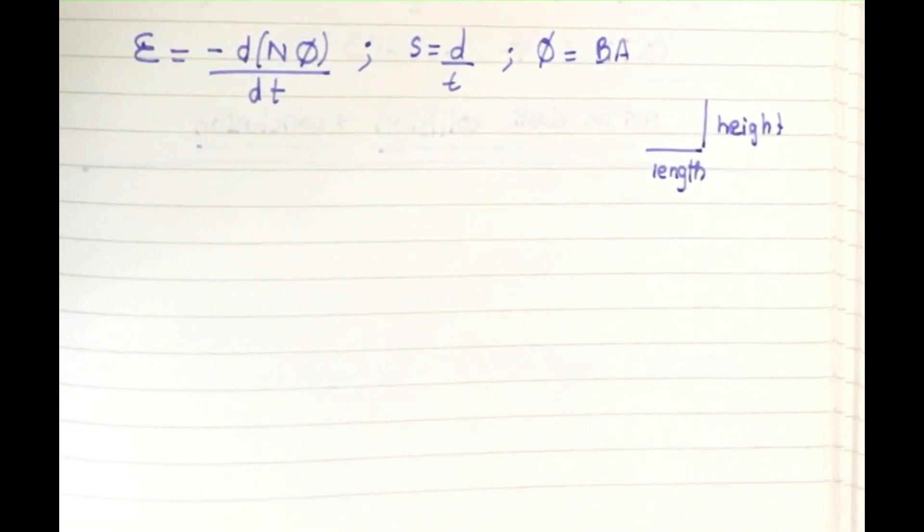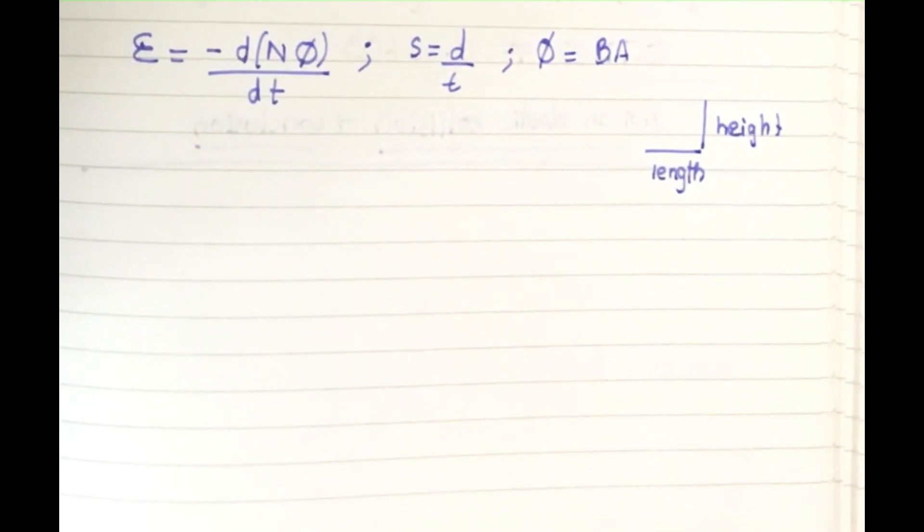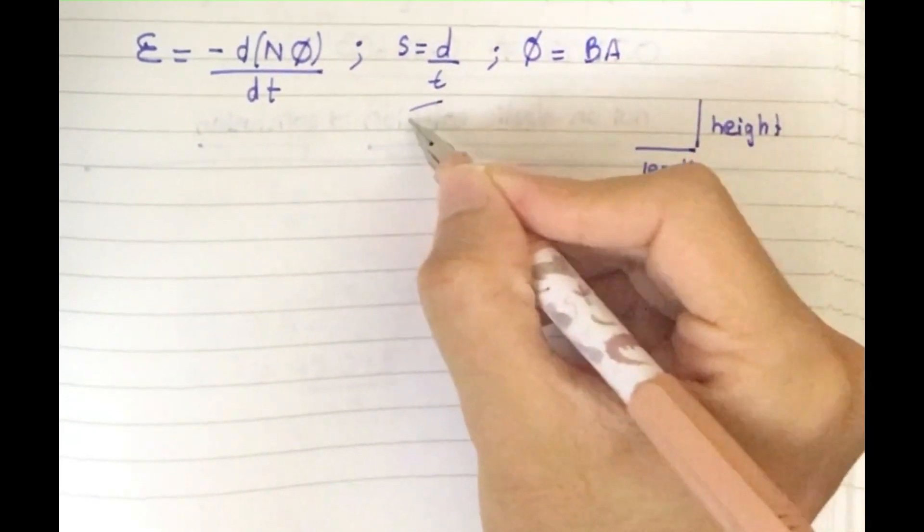I use this to find the base because it says he vertically moved the wire downwards at a constant speed. So basically he's referring to s equals dt, which is speed equals distance by time. That's why I use this formula because it's constant speed.